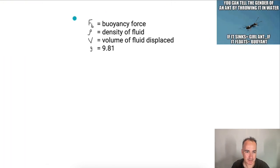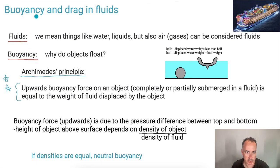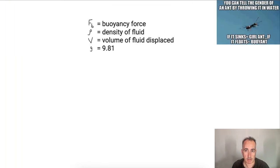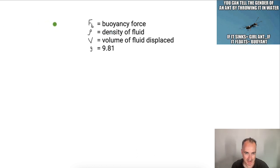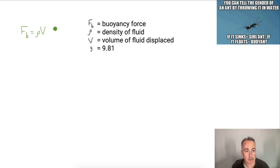Let's figure out the equation for buoyancy. We have an equation that relates the upwards buoyancy force to the weight of the fluid displaced, and it's nice and straightforward. It's FB, which equals rho — the density of the fluid — times capital V, the volume of the fluid displaced, times g, the acceleration due to gravity. This is the equation form of Archimedes' Principle. The buoyancy force is measured in Newtons; density in kilograms per meters cubed; volume in meters cubed; and g is 9.81 meters per second squared.